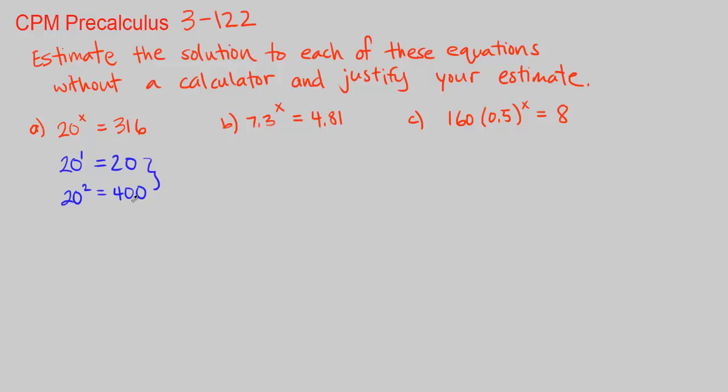Somewhere in between. So I'm going to say 20 to the power of somewhere between 1 and 2, 1.5, 1.6. I'm going to say 1.6 is approximately 316. That's our estimate. So the estimate for x is approximately 1.6. To get the exact value for x, we know how to do that with the calculator.